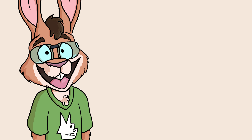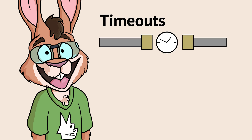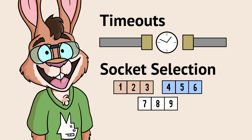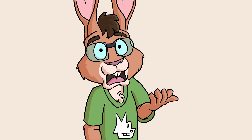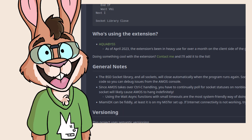The example code shows the combination of timeouts and socket selection that make writing network code in Amos as safe as possible. The extension is licensed under the MIT license, so use it as you wish.